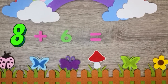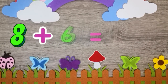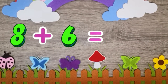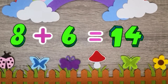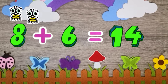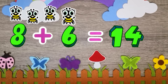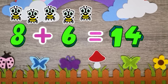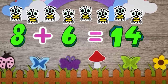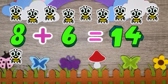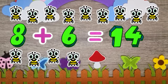8 plus 6 equals 14. 1, 2, 3, 4, 5, 6, 7, 8, 9, 10, 11, 12, 13, 14.